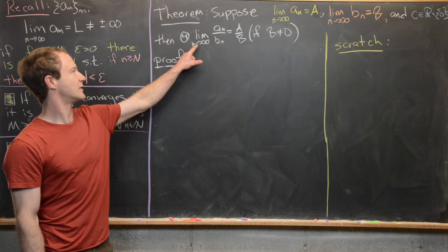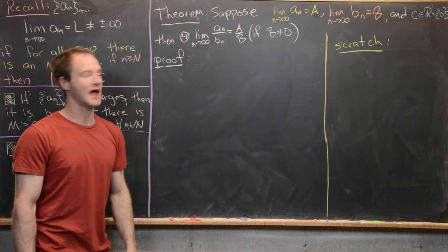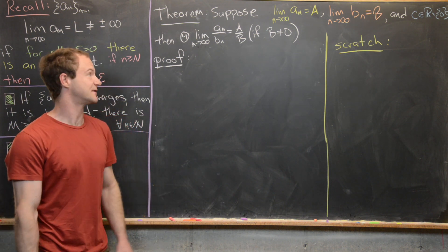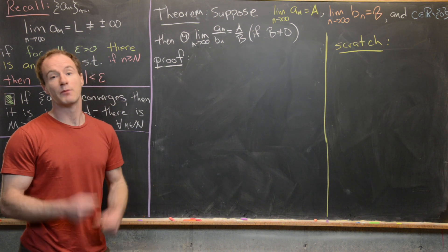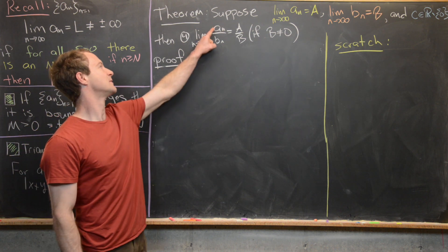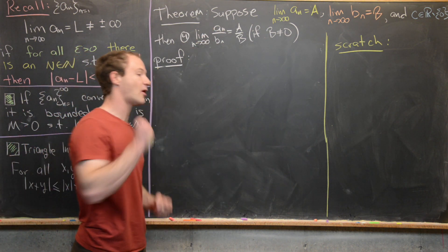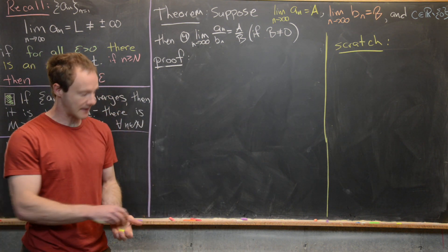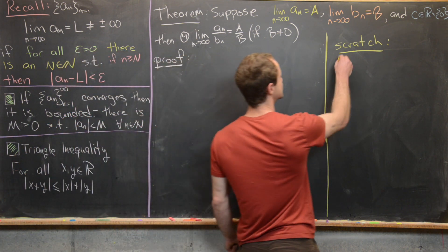For the last property, we want to prove lim(aₙ/bₙ) = A/B, provided b ≠ 0. We won't prove this directly — instead we prove the special case where the numerator is 1, showing lim(1/bₙ) = 1/b, and then apply the multiplicative property from part 3 to get the full result.